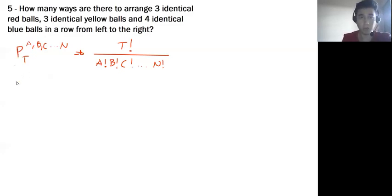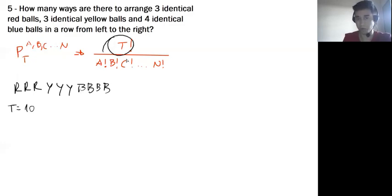Three identical red balls: one, two, three. Three identical yellow balls: one, two, three. Four identical blue balls: one, two, three, four. So we have a total of 10 elements.